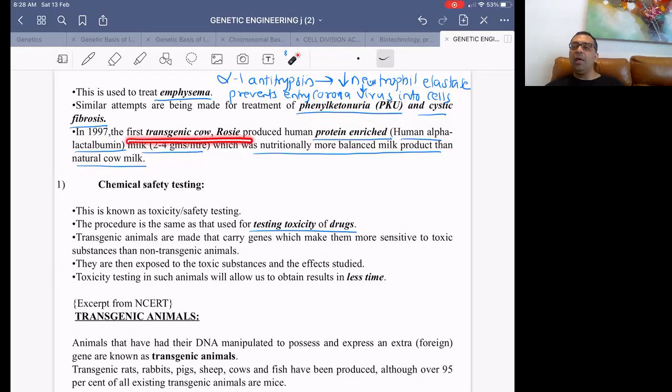And chemical safety testing - toxicity of drugs. When any new medicine is made, to know the side effects, it is tested on transgenic animals. You test medicine on transgenic animal and find out about toxicity or side effects of the drug. So many applications of transgenic animals. I hope you've understood this. With this we have finished off the chapter.